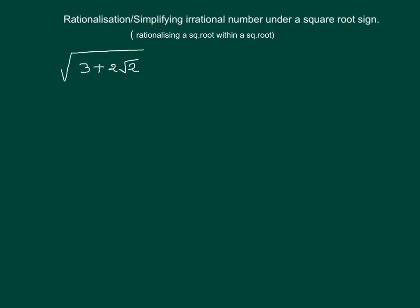Hello friends, in this video we are going to discuss simplification and rationalization when we have an irrational number under a root sign. Look at the question on the slide: we have √(3 + 2√2).